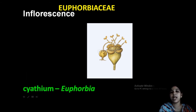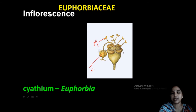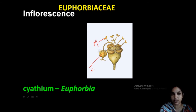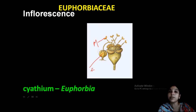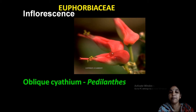This is the largest single female flower inside the cyathium. The male flowers are represented by anthers — each male flower is a single stamen. There is also a nectary disc present. This is a cyathium inflorescence — typical inflorescence of Euphorbia members. An oblique cyathium is present in Pedilanthus.